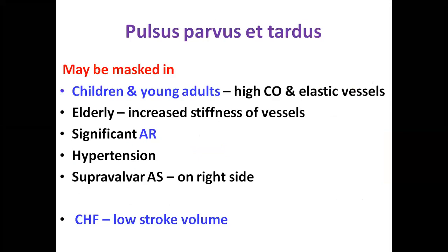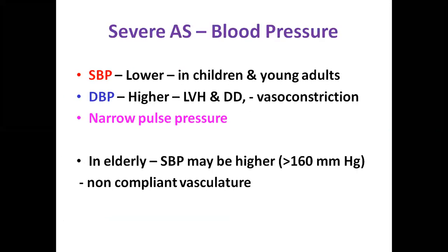Blood pressure in severe aortic stenosis: systolic BP becomes lower, especially in children and young adults; diastolic BP goes up because of LV hypertrophy, diastolic dysfunction, and vasoconstriction. However in the elderly, systolic BP may be higher due to non-compliant vasculature. S1 may be normal or become soft in LV dysfunction. S3 occurs only when there is LV dysfunction in adults. S4 is important for severity — a palpable S4 at any age is abnormal and indicates an LV-aortic gradient of 70 mmHg or more. Audible S4 in elderly, hypertension, or coronary disease has less significance as these conditions themselves can cause S4. S4 is absent in atrial fibrillation.